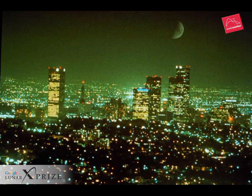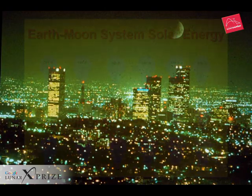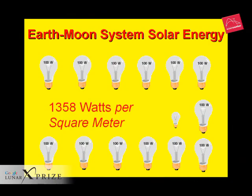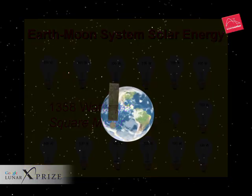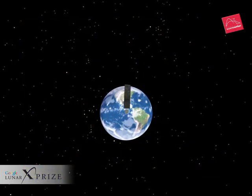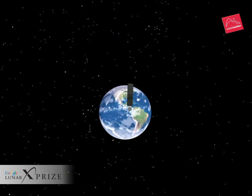But our local star, the Sun, bathes the Earth-Moon system with enormous amounts of power. Every square meter of surface area in the neighborhood of the Earth and Moon sees enough power to light up 13 big 100-watt light bulbs, plus one little 60-watt light bulb, all the time. For more than 30 years, NASA and the Department of Energy have explored ways to use that energy from the Sun.